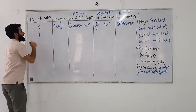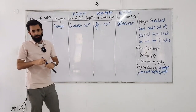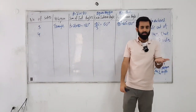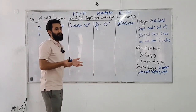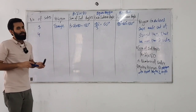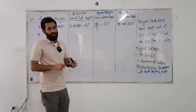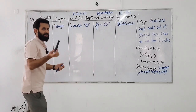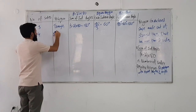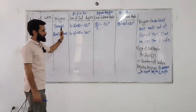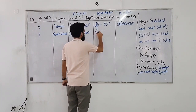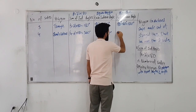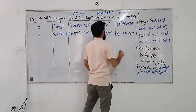What about a four-sided polygon? Not necessarily a square — it can be a parallelogram, rhombus, trapezium, rectangle, or a kite. A four-sided polygon is called a quadrilateral, and its sum of interior angles is 360. Each interior angle is 360 divided by 4, which is 90 degrees. And each exterior angle? 180 minus 90 is 90 degrees.